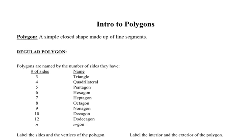Remember from middle school that a polygon is a simple closed shape made up of line segments. The simplest and most basic polygon is the three-sided polygon, the triangle. A regular polygon is a polygon that has all of its sides congruent and all of its angles congruent.